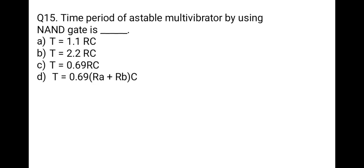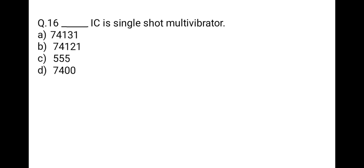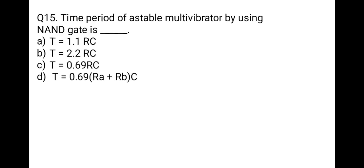The next question: the time period of an astable multivibrator using a NAND gate is which formula? Options: T = 1.1RC, T = 2.2RC, T = 0.69RC, or T = 0.69(RA + RB)C. The correct option is B, T = 2.2RC.